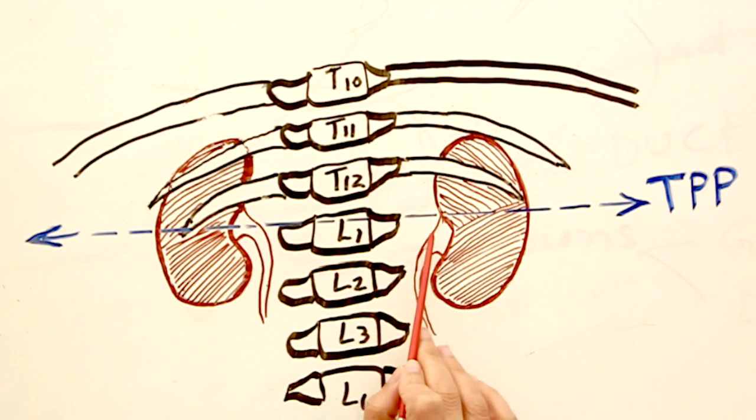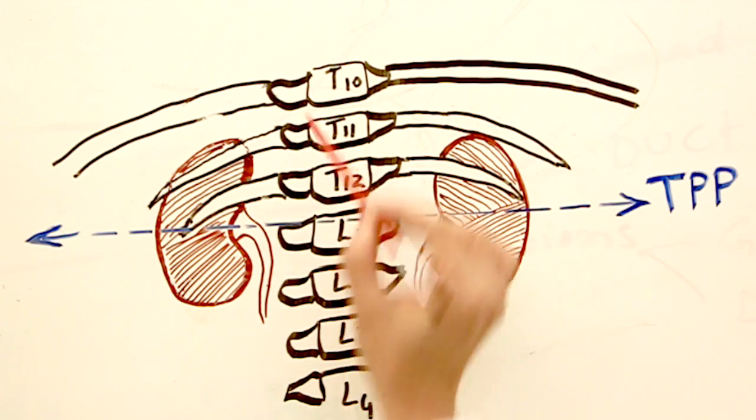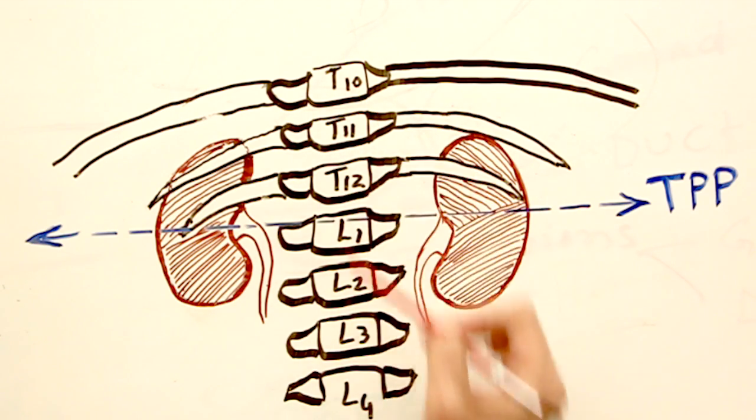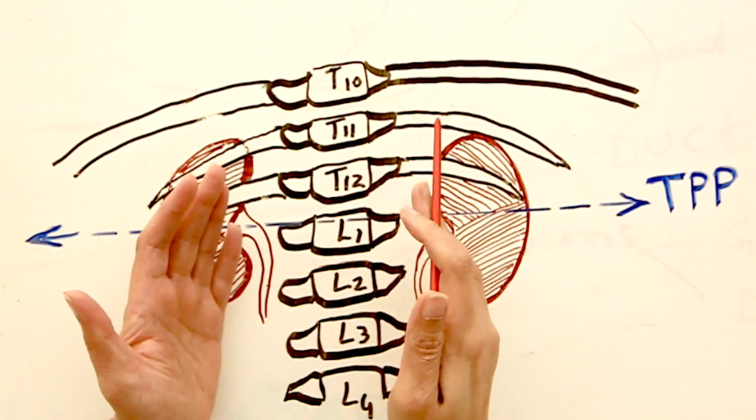Both kidneys are lying five centimeters away from the vertebral column or midline. We have seen on the original specimen that they are flanking the vertebral column, lying five centimeters lateral to it.